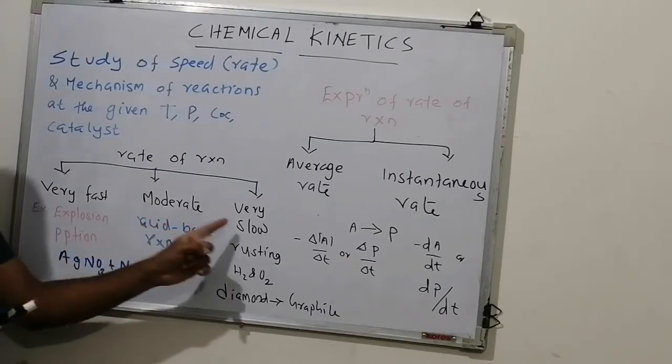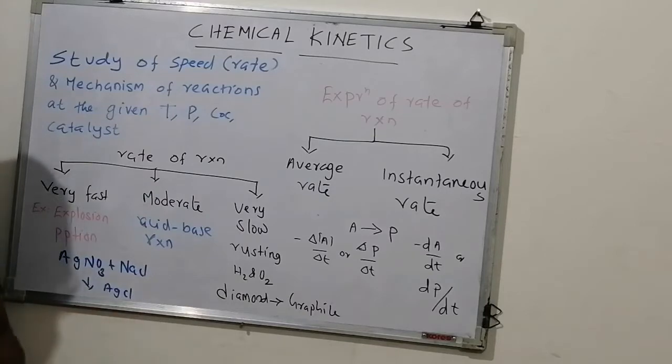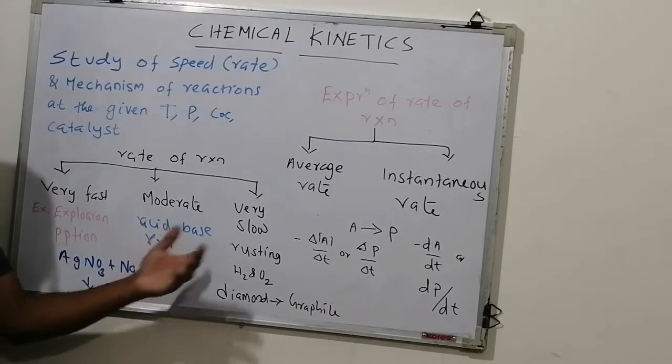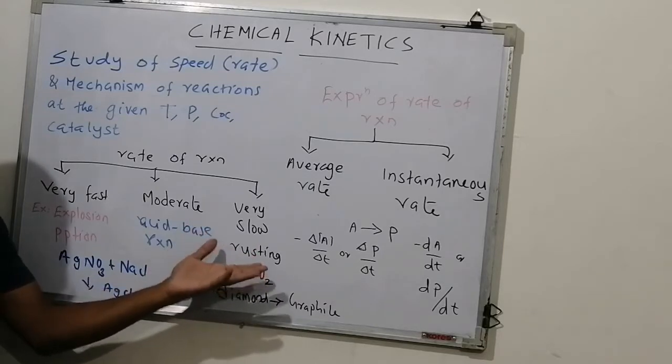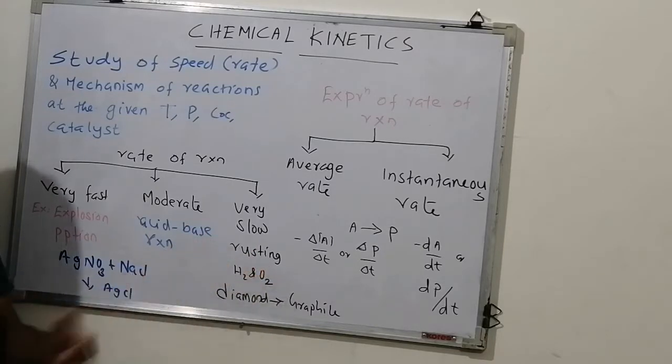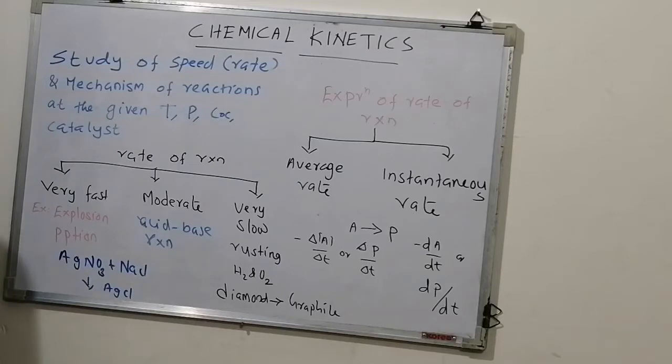The other extreme is very slow reactions. Rusting. Hydrogen and oxygen. Diamond. Either they take place over years - rusting takes place over years - or literally do not take place.